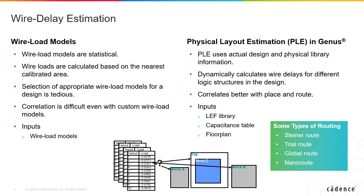Routing tools like NanoRoute that you see here are what are employed by the physical design tools to lay down the metal layers or the wires. Physical tools use routing and extraction to determine the actual wire delays by laying down the metal layers to connect the various cells in your design.